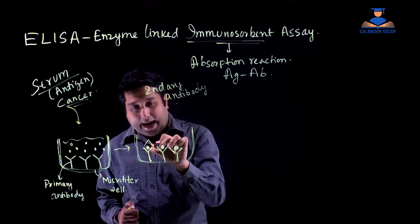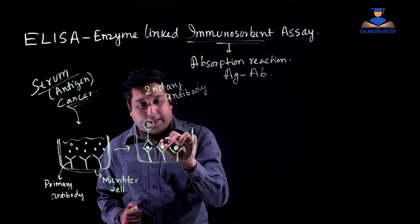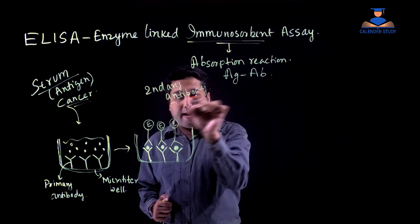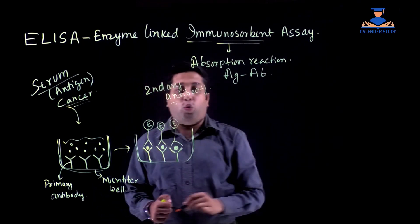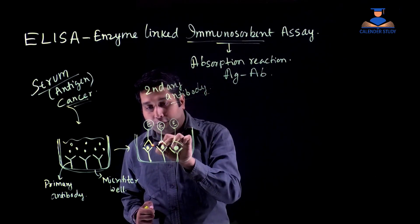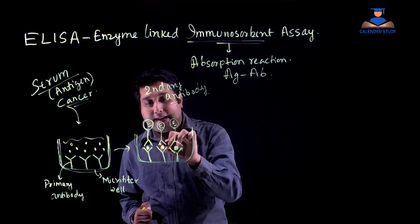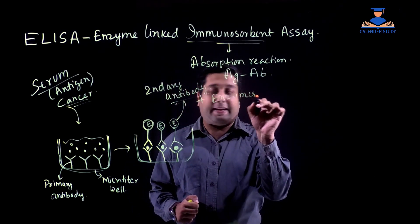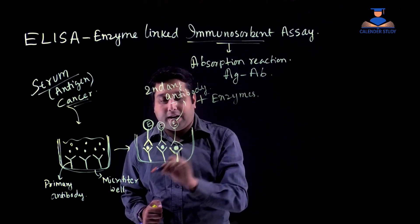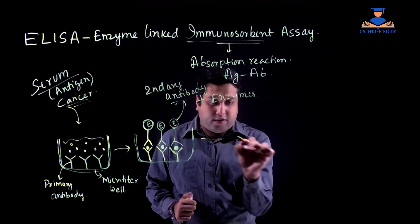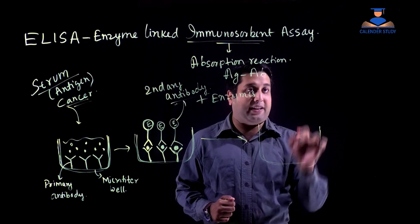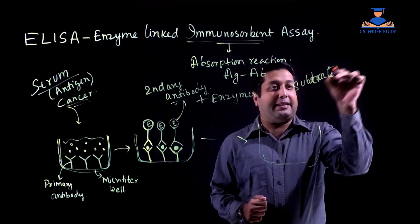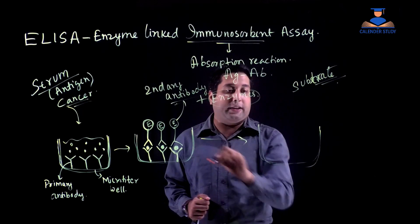Then we add the secondary antibody. This secondary antibody is attached with a specific type of enzyme at its tail part. The secondary antibody is also specific for the antigen we are detecting. The secondary antibody complexed with the enzyme gets attached to the already present antigen-primary antibody complex. Then we add a specific substrate, which is specific for this enzyme only.